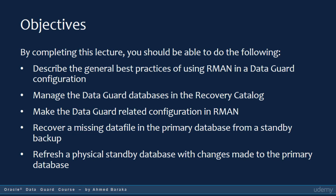In this lecture you will learn how to do the following: describe the general best practices of using RMAN in a Data Guard configuration; manage the Data Guard databases in the Recovery Catalog; make the Data Guard related configuration in RMAN; recover a missing data file in the primary database from a standby backup; and refresh a physical standby database with changes made to the primary database.